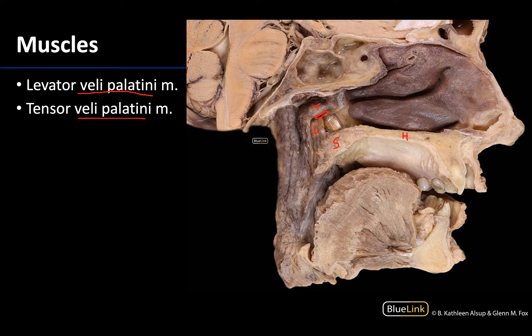The tensor veli palatini will originate on the sphenoid and pharyngotympanic tube as well, and insert on the palatine bone. Its tendon will play a big role in terms of widening and forming a great portion of the palatine aponeurosis.